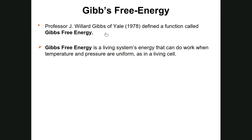A professor named J. Willard Gibbs at Yale defined a function called Gibbs free energy. He was trying to simplify the explanation for the laws of thermodynamics. Gibbs free energy is defined as a living system's energy that can do work when temperature and pressure are uniform. In a living cell, temperature is roughly 37°C and pressure is roughly 760 mmHg — so 'uniform' means constant or unchanging.